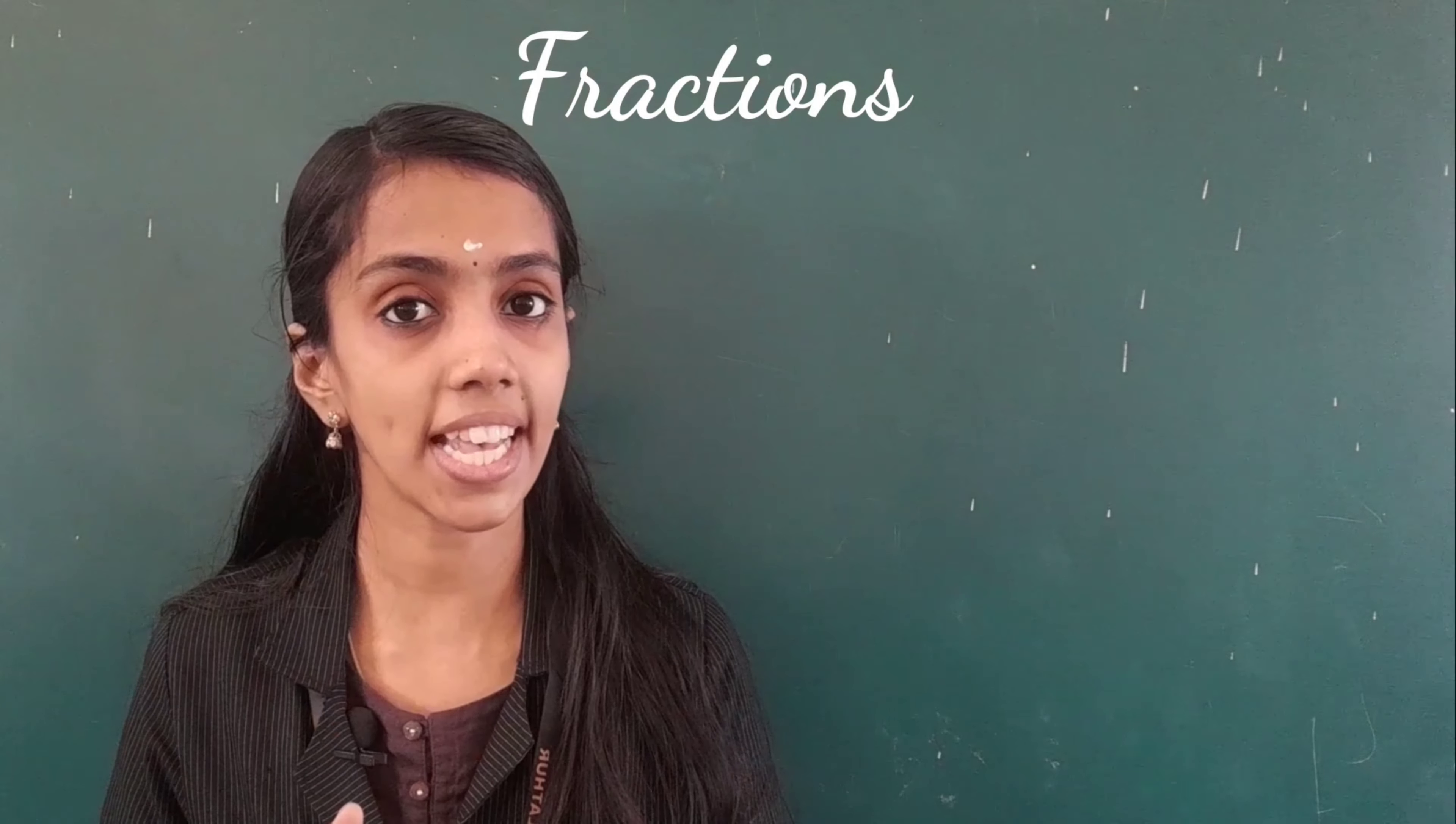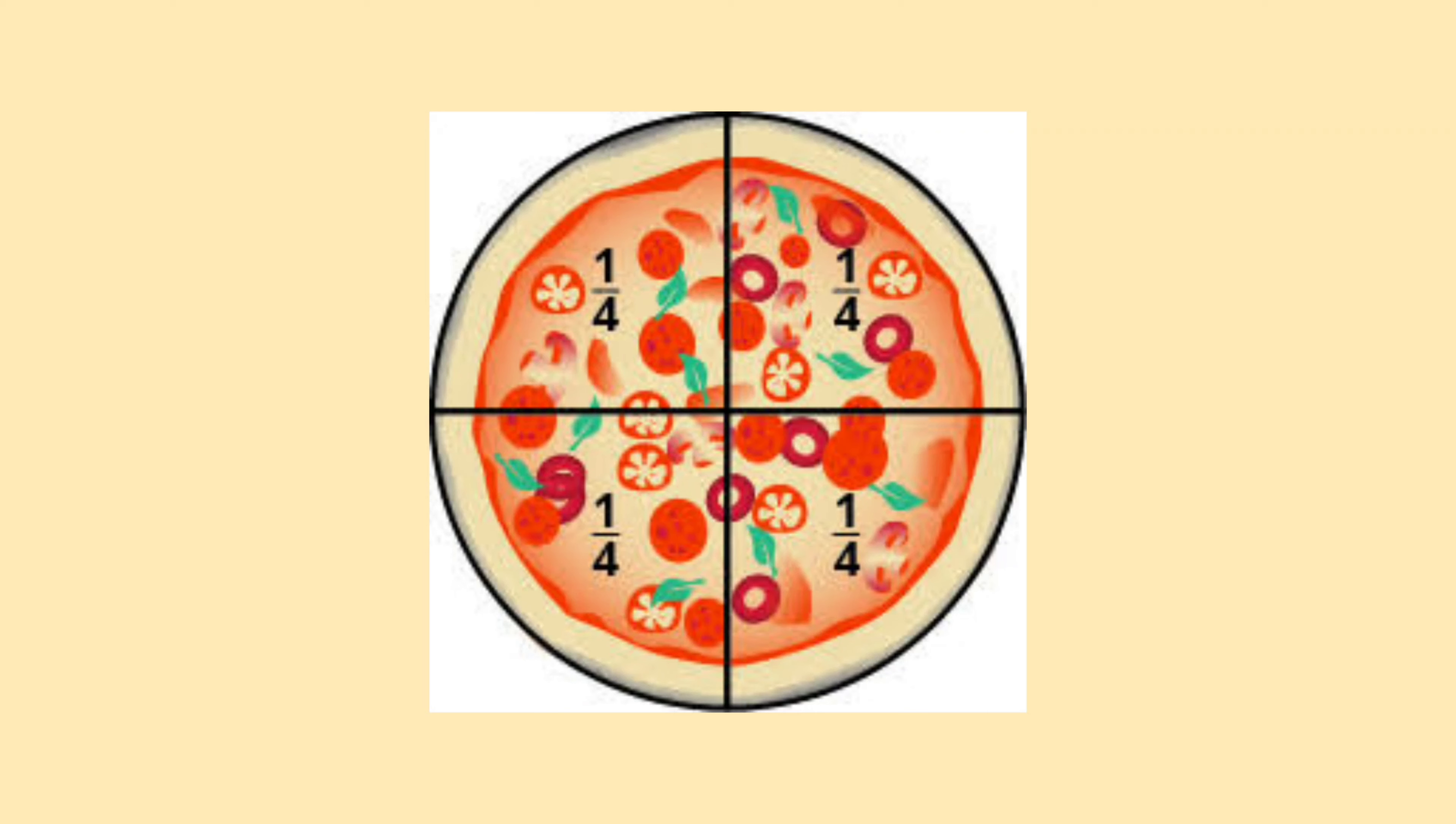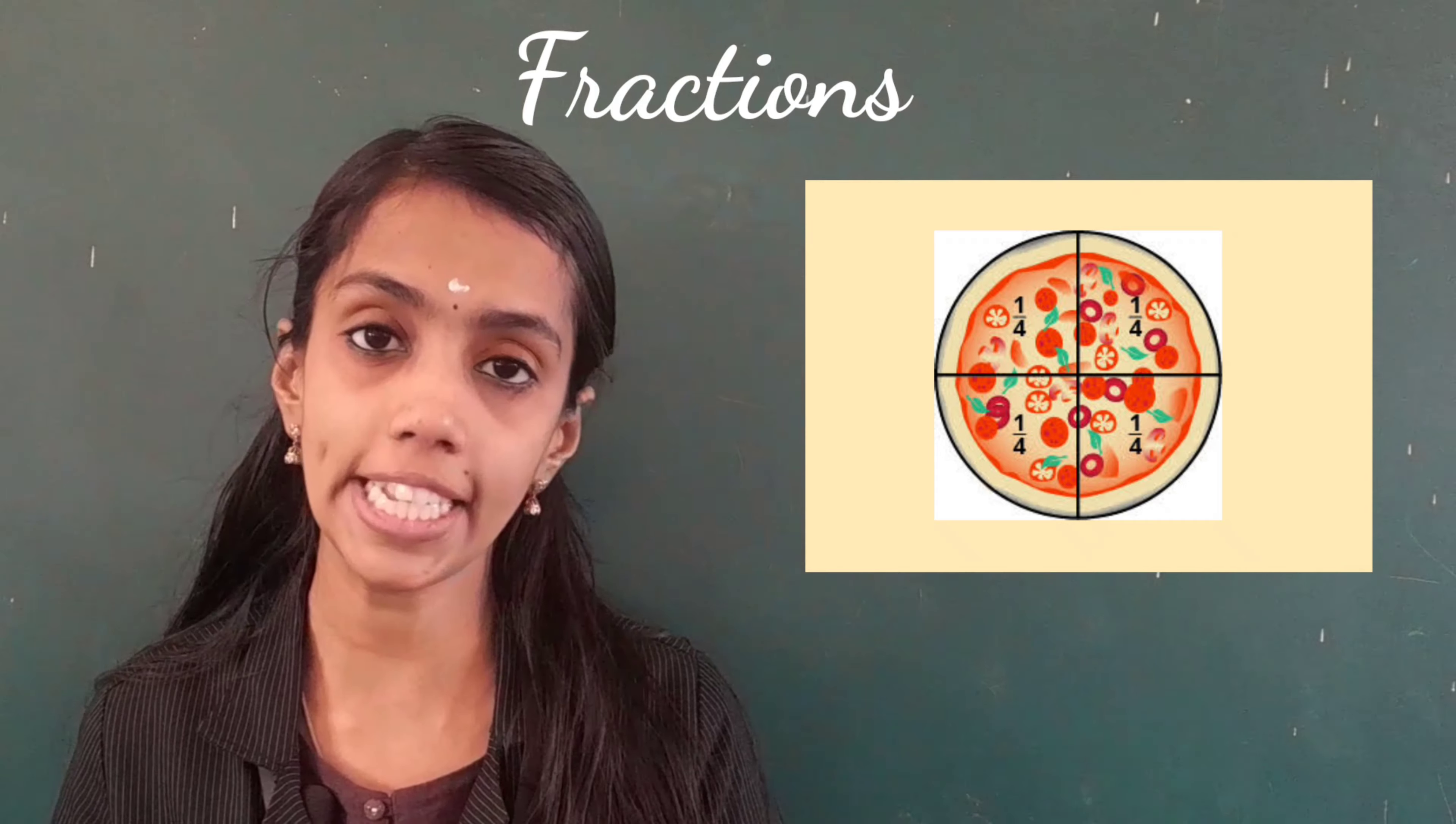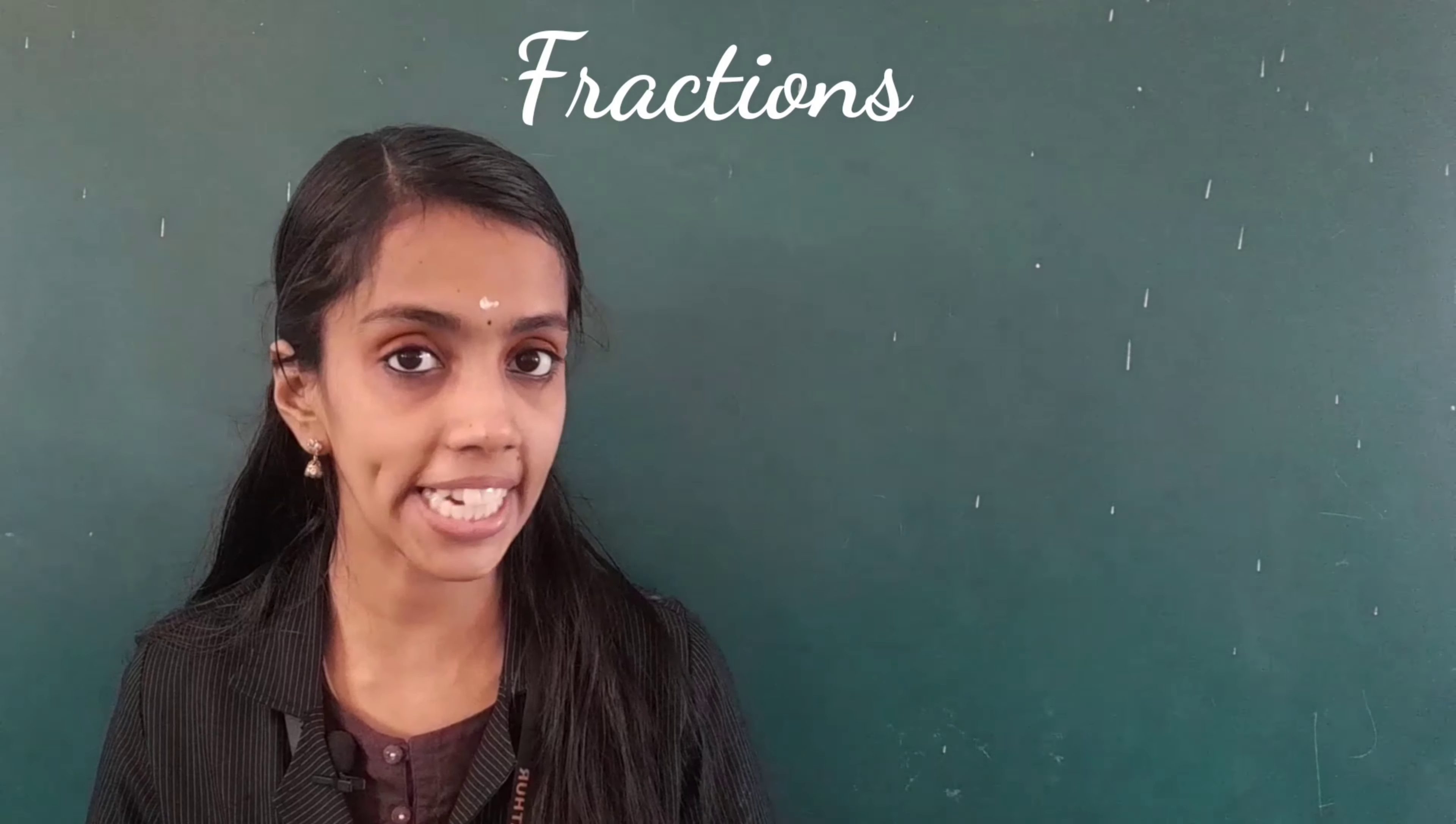For example, a pizza is divided into four pieces. So, each piece of it is represented as 1/4 of the pizza. Here, 1 is the numerator, 4 is the denominator.